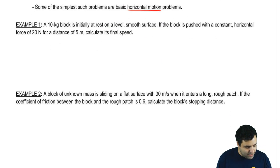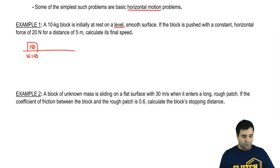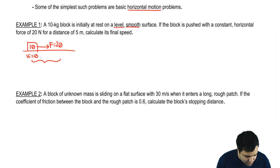Example 1: A 10-kilogram block is initially at rest on a level, smooth, frictionless surface. The block is pushed with a constant horizontal force of 20 Newtons for a distance of 5 meters. Calculate its final speed. In other words, how fast will it be moving after 5 meters? If this is initial, this here, 5 meters later, is final. And I want to know what is V final.